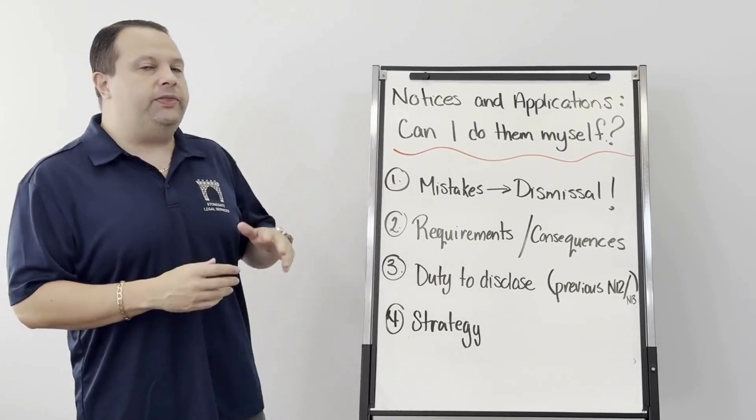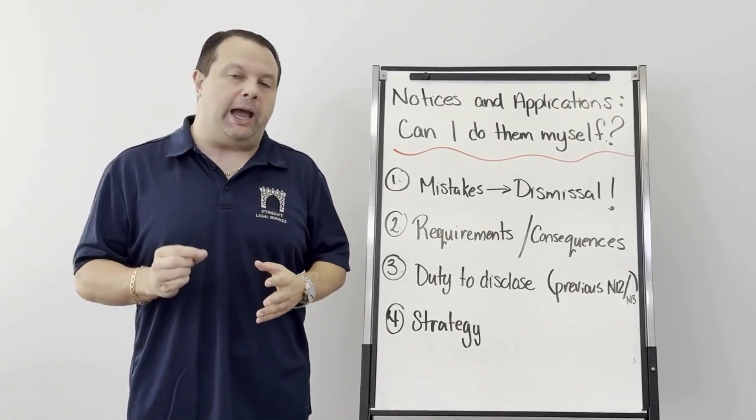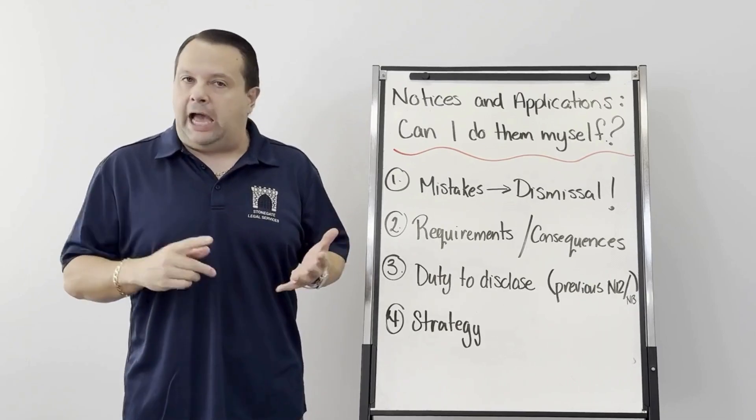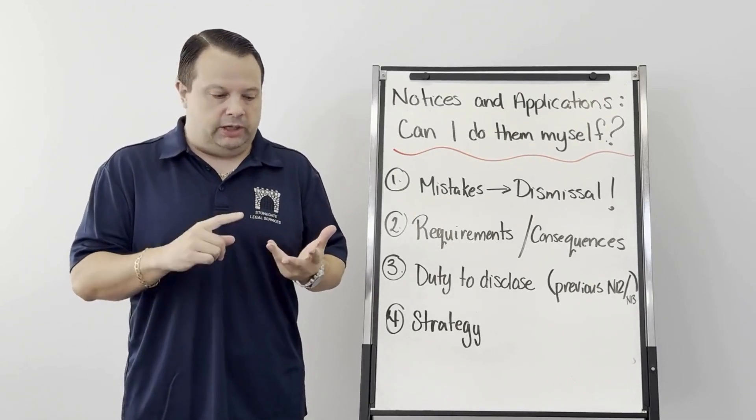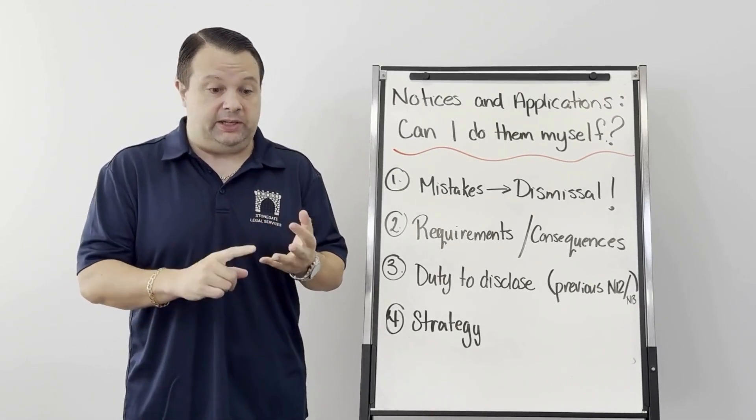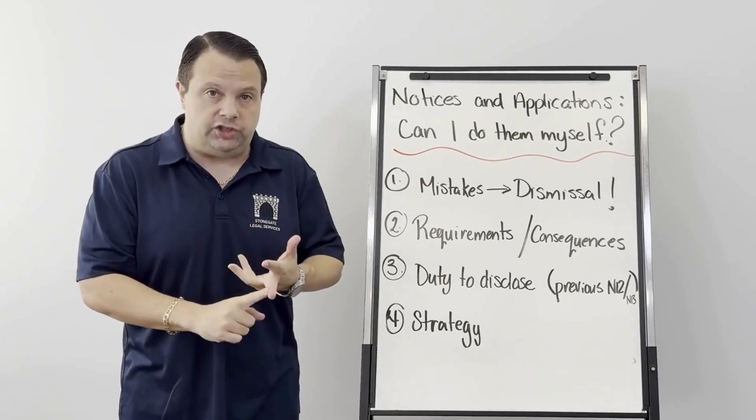So number one, common thing is people make minor mistakes. The address, the unit number, is it a basement, the names of the tenants, the names of the landlord, the termination date.